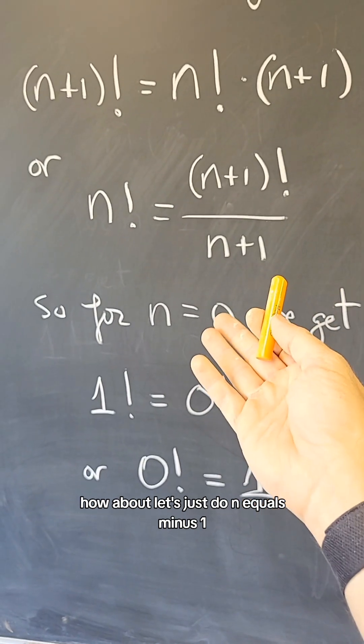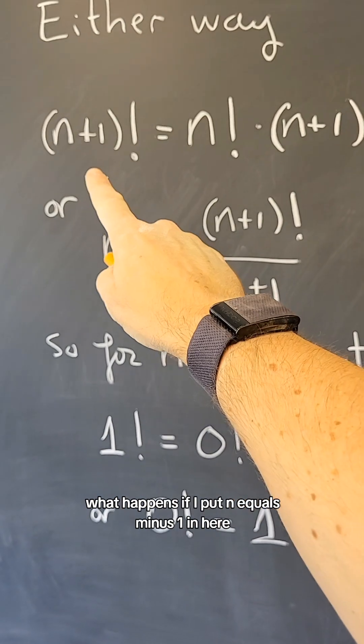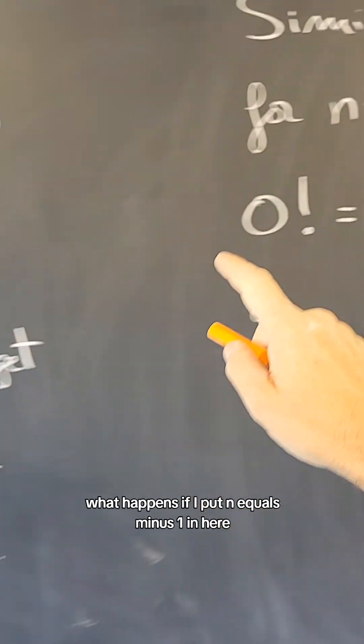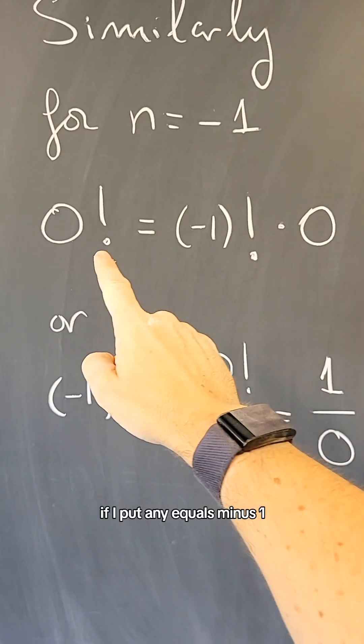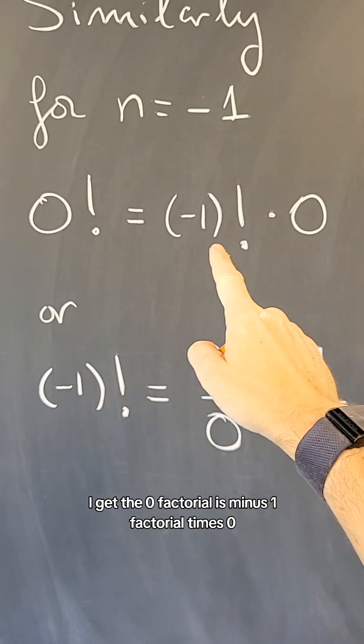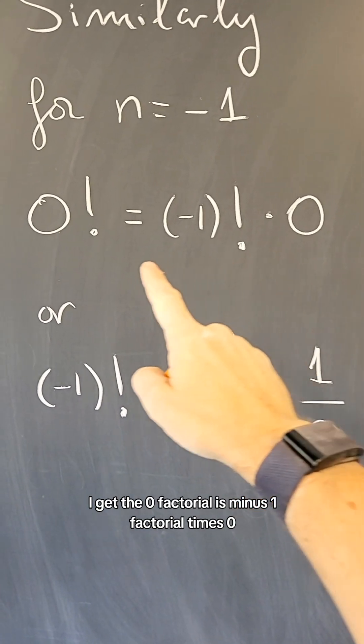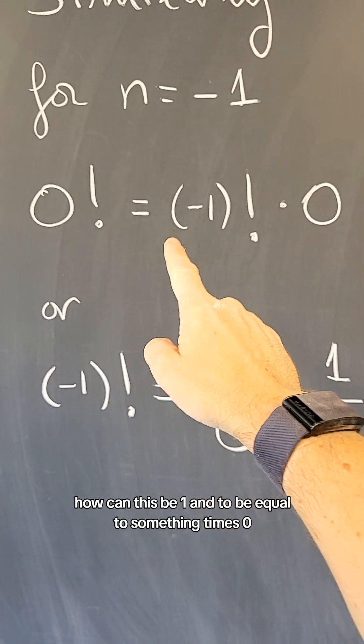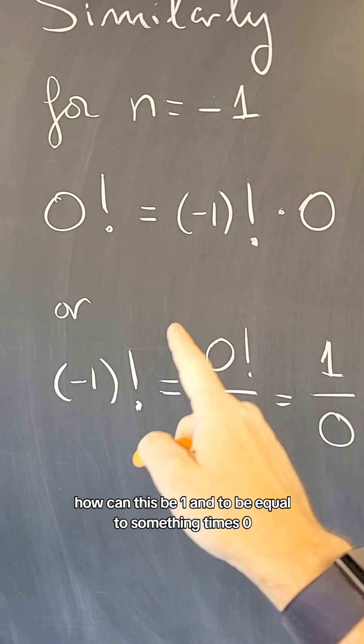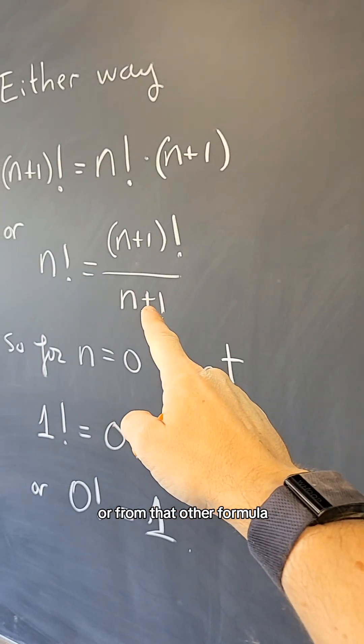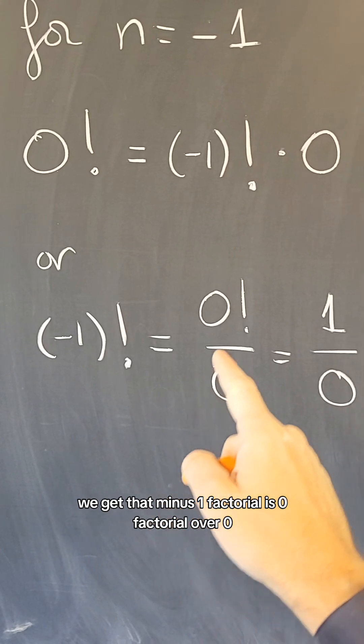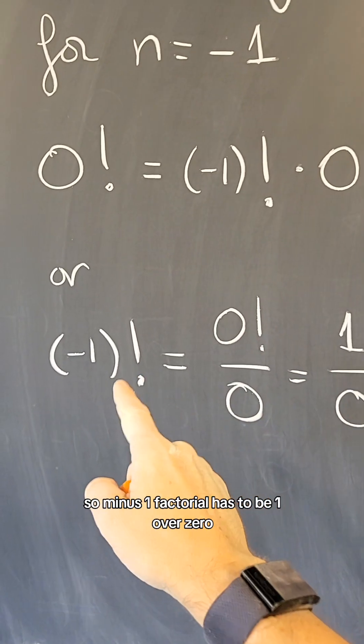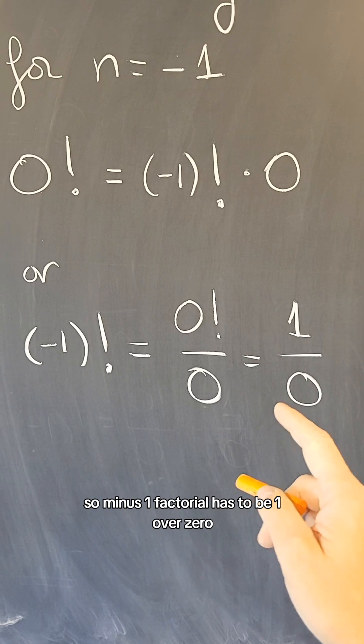how about let's just do n equals minus 1. What happens if I put n equals minus 1 in here? If I put n equals minus 1, I get that 0 factorial is minus 1 factorial times 0. How can this be 1 and to be equal to something times 0? Or from that other formula, we get that minus 1 factorial is 0 factorial over 0, so minus 1 factorial has to be 1 over 0.